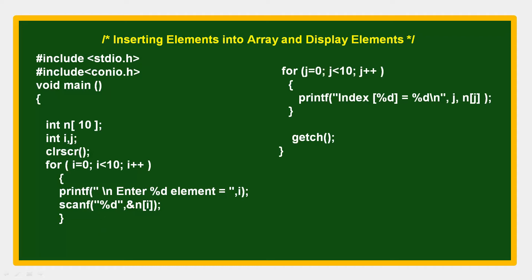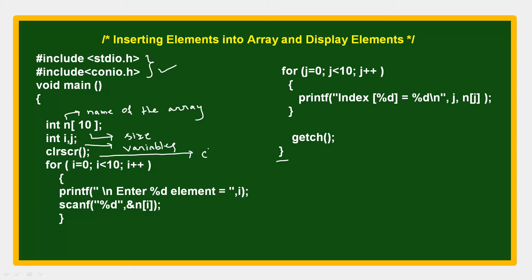Now you can see a program for inserting and displaying elements in an array. We include two header files: stdio.h (standard input/output) and conio.h (console input/output). We write our code inside the main function — void main(). We declare int n[10], where n is the name of the array and 10 is its size. We also declare simple variables int i, j. clrscr() clears the screen.